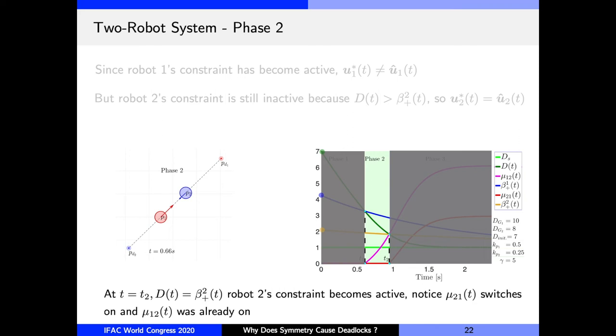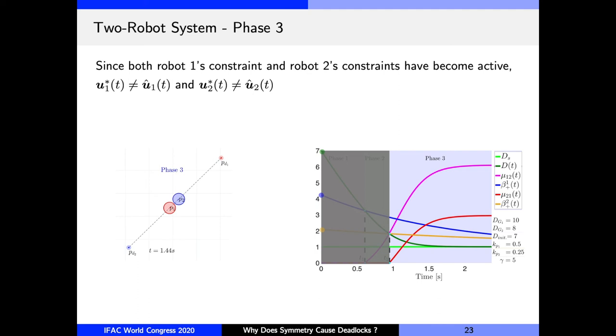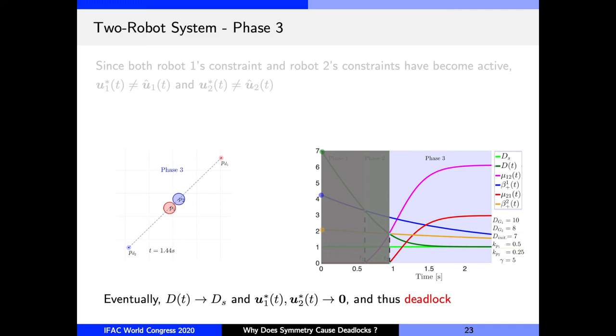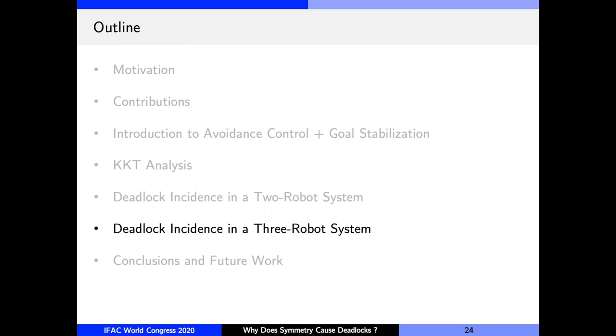Finally, we enter phase three where the constraint of each robot is active. We show in this paper that in this phase, the distance between robots exponentially converges to the safety margin d_s. And because of that, the controls for each robot also converge to zero, which means that robots come to a stop and hence have fallen in deadlock. So this concludes the proof for the two robot system. Now let's look at the three robot system.